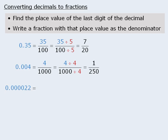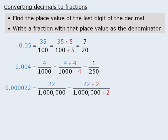For one last conversion, the last digit is 2 and it is in the millionths position. So we can write this decimal as the fraction 22 over 1,000,000. Dividing top and bottom by 2, we get 11 over 500,000. So the decimal 0.000022 equals the fraction 11 over 500,000.